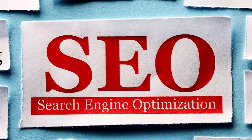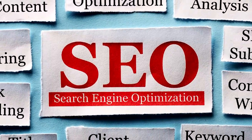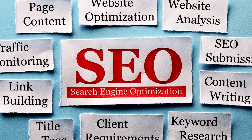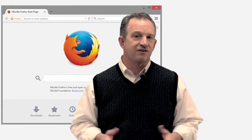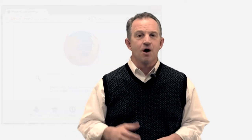SEO — you've probably heard about it — or search engine optimization, is all about getting on the first page of an internet search. Google and Bing are the top two search engines out there, but Google owns the town. There are others like Firefox, so don't leave them out.